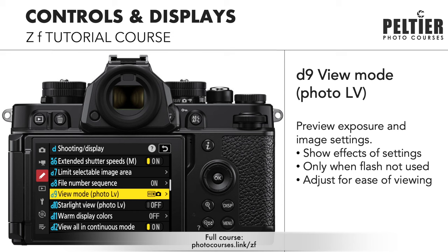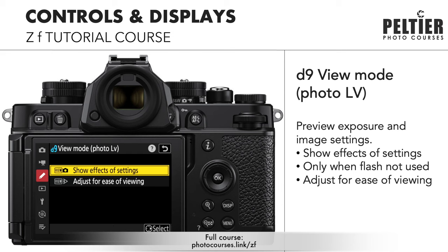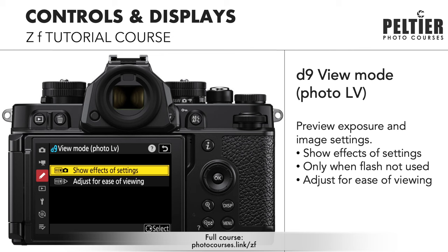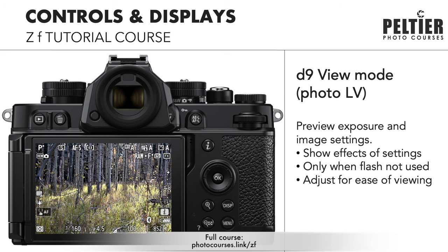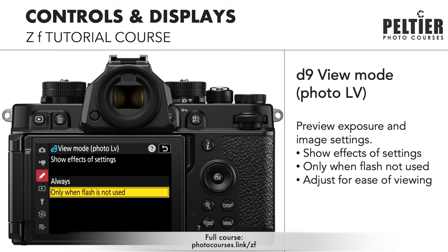D9, view mode for photo live view. This allows you to set whether or not you want your exposure and image settings previewed in the live view. 'Show effects of settings' lets you see how your picture control, white balance, and exposure settings are going to affect your final processed photo. Note that what you see in live view is not what your raw photo will look like if you're recording raw. If you're working with studio strobes, you can press the multi-selector right and choose 'only when flash is not used' to see your composition better in dark studio environments.